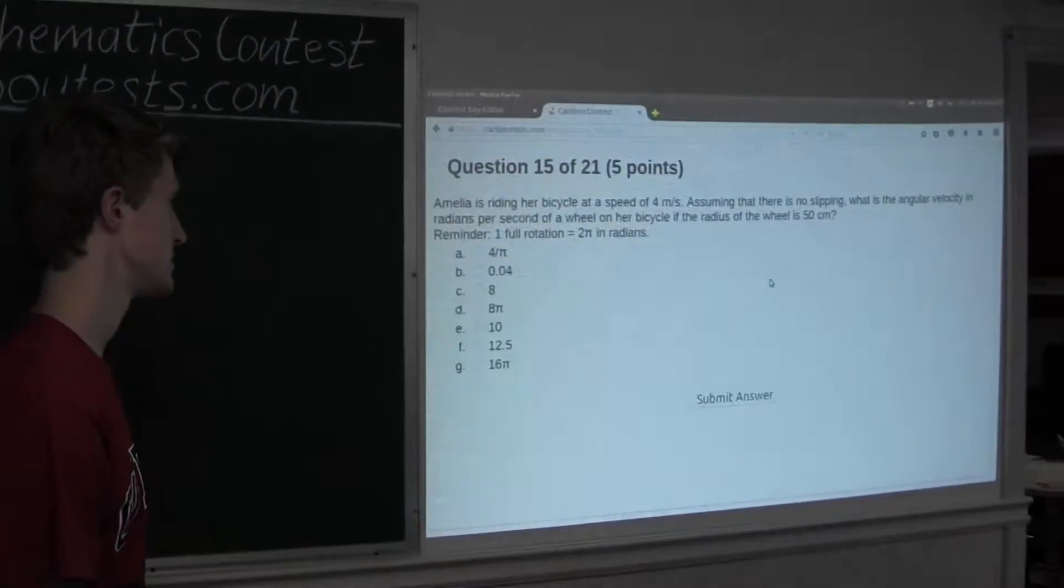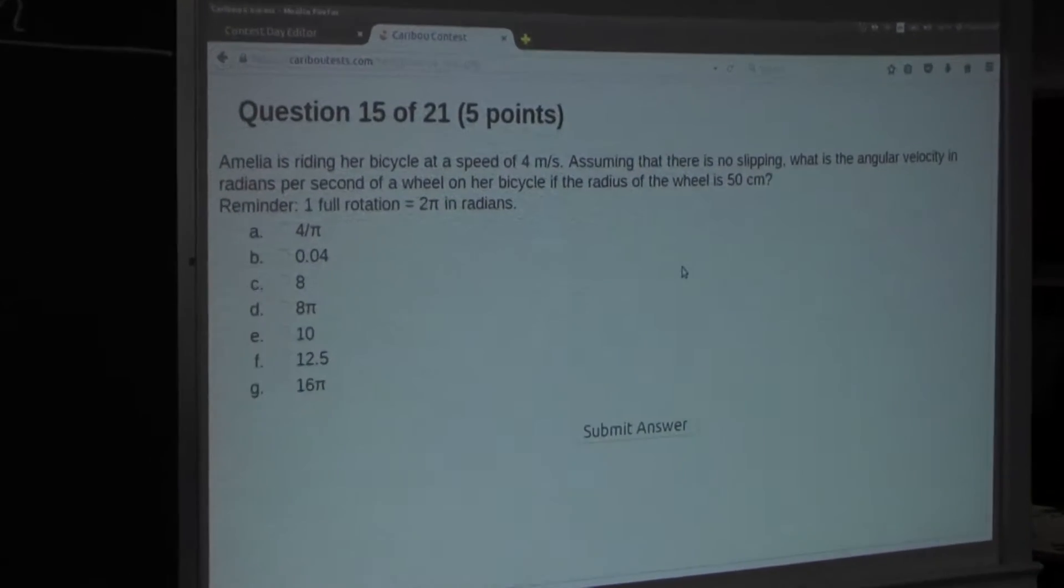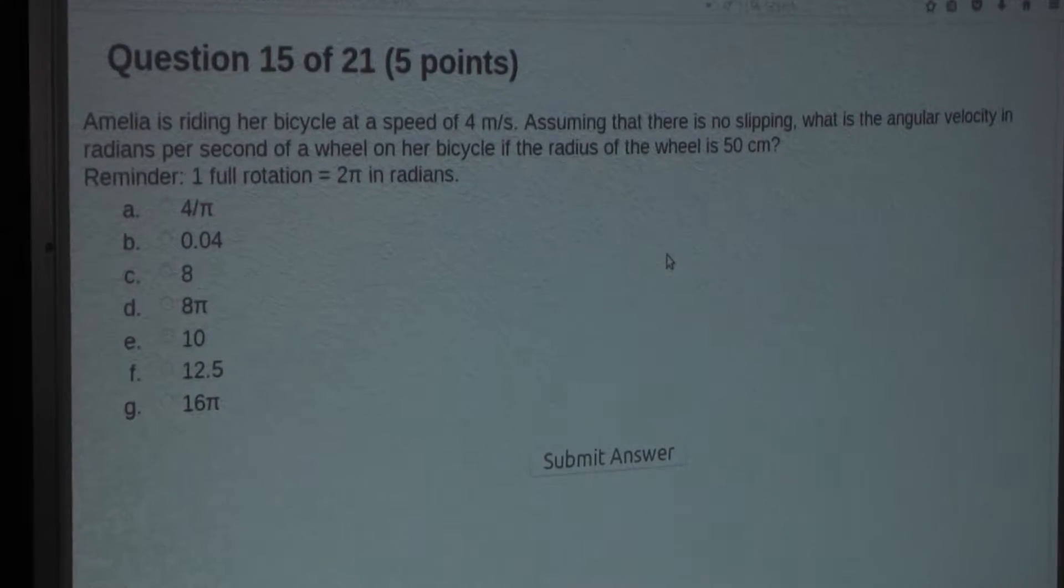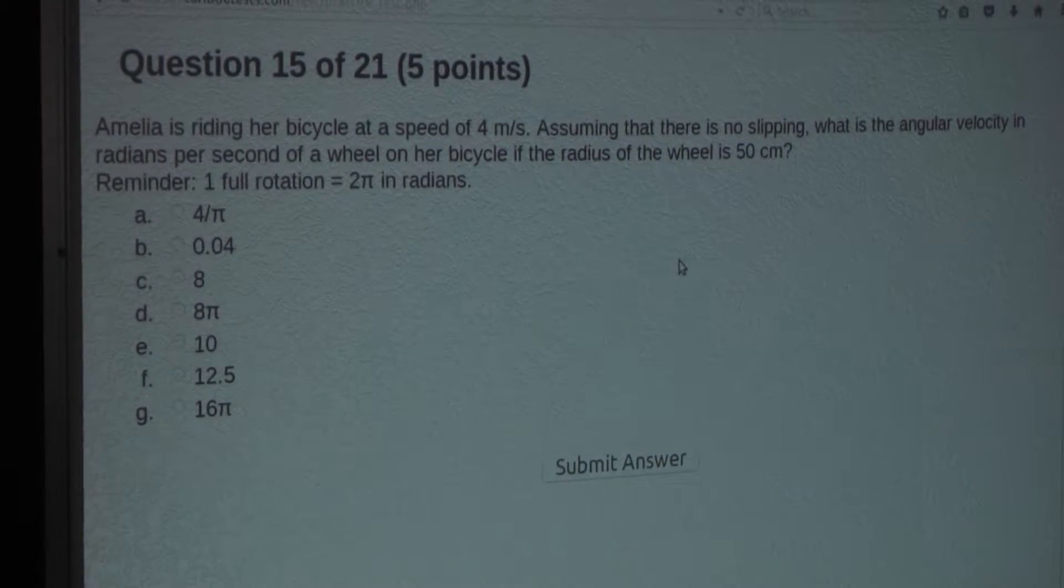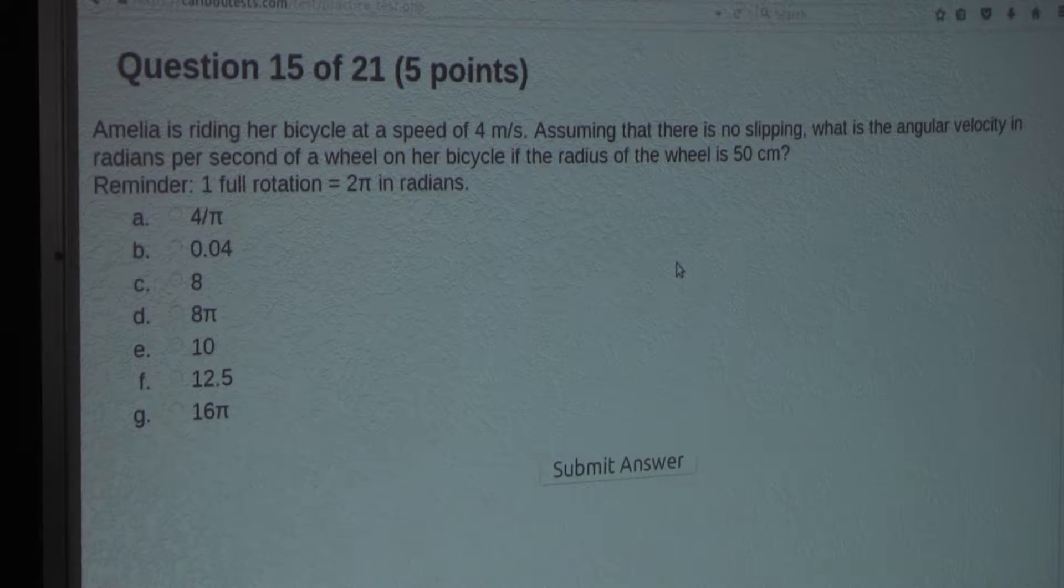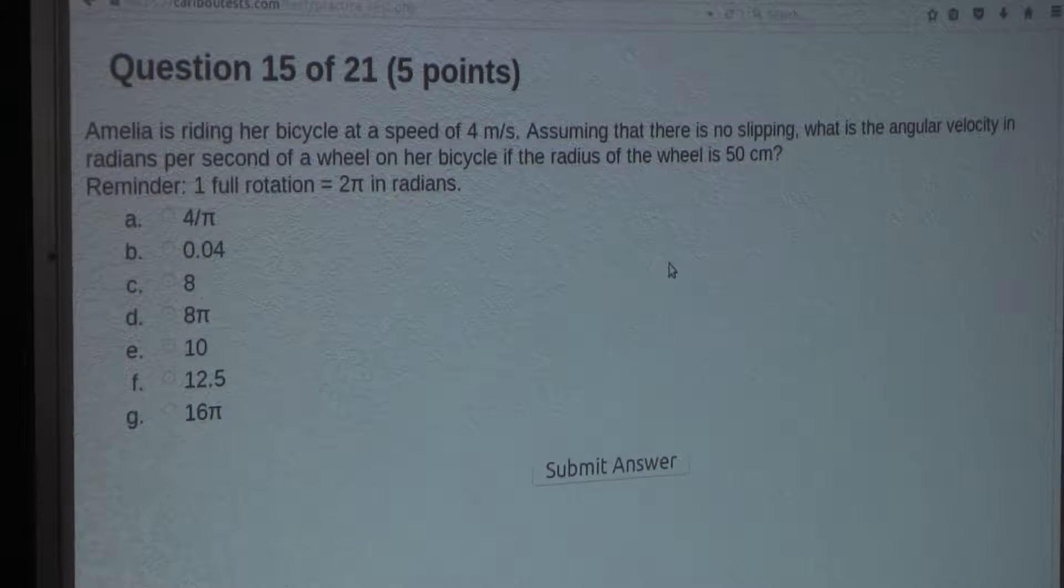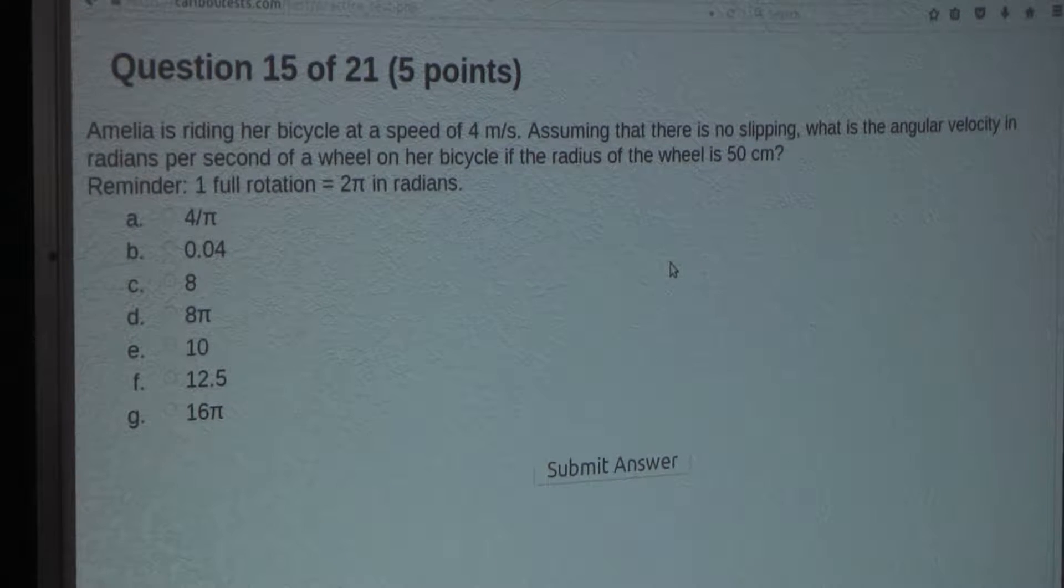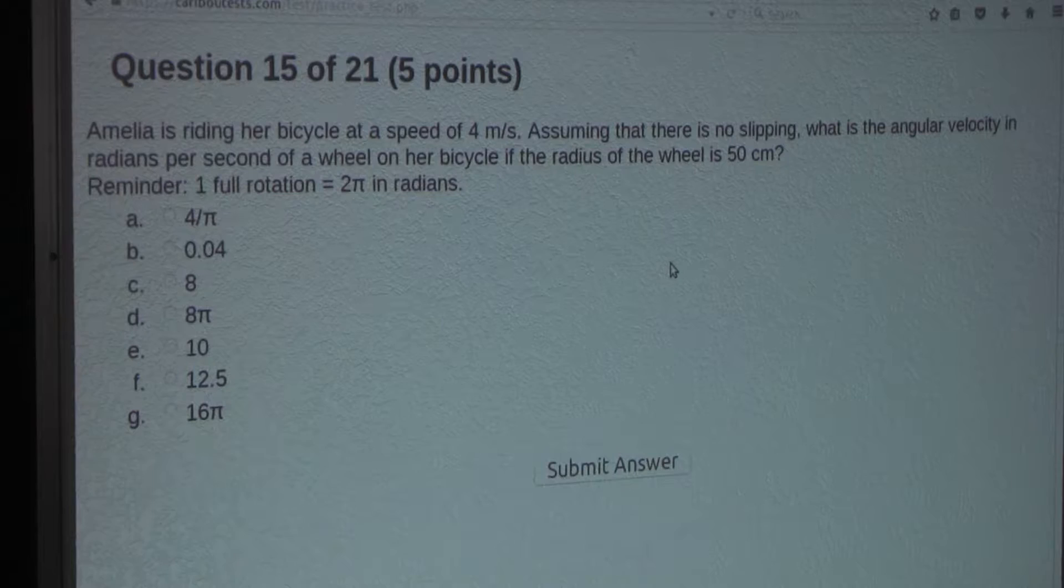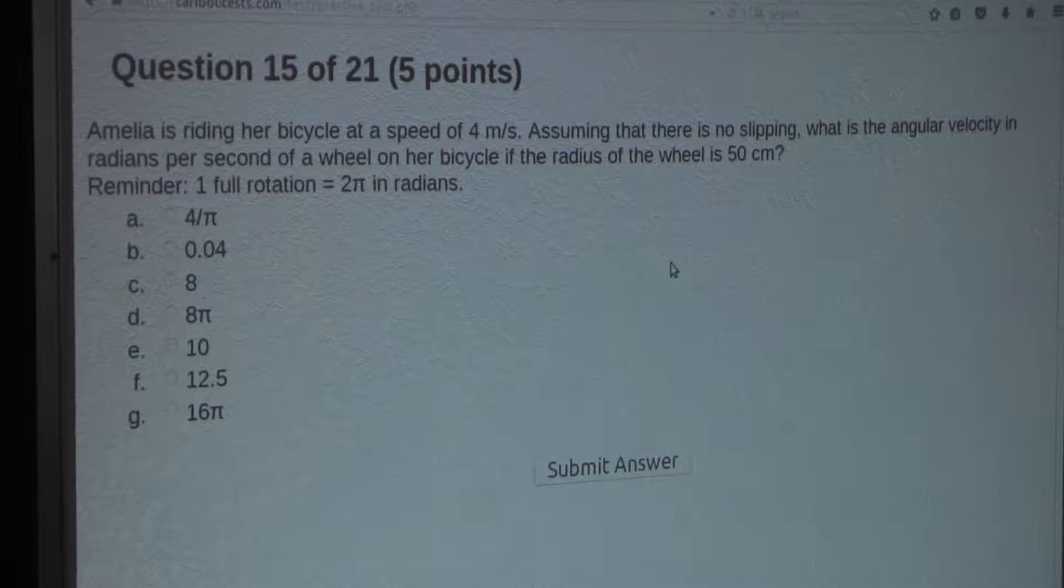So the question is, Amelia is riding her bicycle at a speed of 4 meters per second. Assuming that there is no slipping, what is the angular velocity in radians per second of a wheel on her bicycle if the radius of the wheel is 50 centimeters. Reminder, one full rotation is equal to 2π in radians.